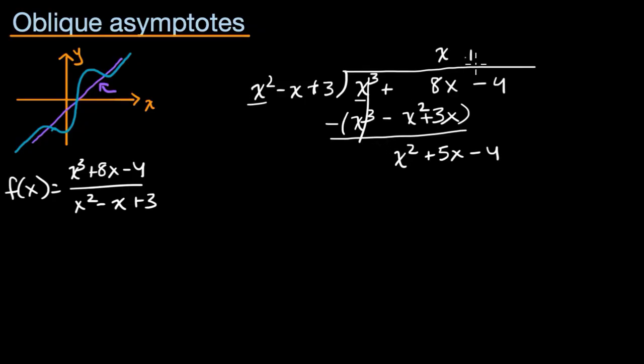X squared goes into x squared one time. So plus 1. One times all of that is x squared minus x plus 3. Subtract. And then we get, that goes away, 5x minus negative x is going to be 6x. And then negative 4 minus 3 is negative 7.